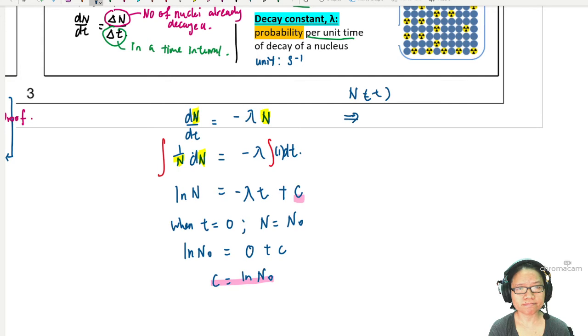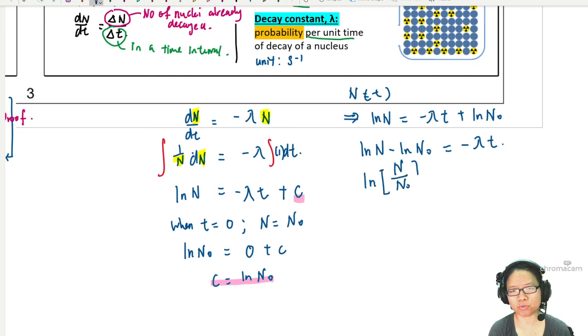Hence, ln N equals negative lambda t plus ln N naught. I need to arrange this a bit. I'm going to rearrange. I will have ln N minus ln N naught equals negative lambda t. So, ln a minus ln b, ln N minus ln N naught, I can put it in a bracket: N over N naught. Bring it together under the same ln.